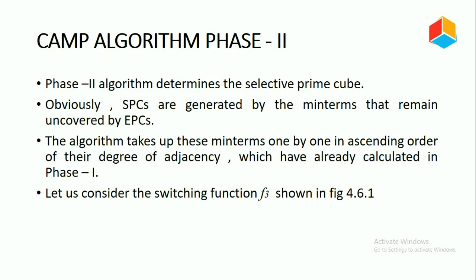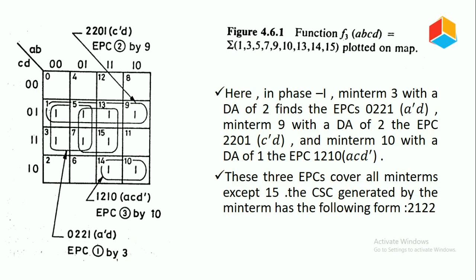Let us consider the switching function F3 as shown in this figure. In Phase 1, the minterm 3 with a degree of adjacency of 2 finds the essential prime cube as (0, 2, 2, 1), that is nothing but ā·d. Here 0 represents ā and 1 represents d, and the two 2s are eliminated variables. So the minterm 3 gives the essential prime cube as (0, 2, 2, 1), that is ā·d.